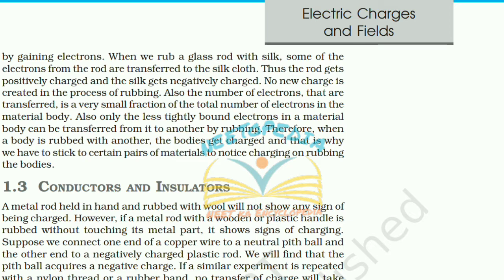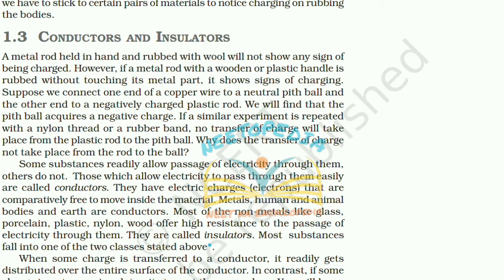1.3 Conductors and Insulators. A metal rod held in hand and rubbed with wool will not show any sign of being charged. However, if the metal rod with a wooden or plastic handle is rubbed without touching its metal part, it shows signs of charging. If we connect one end of a copper wire to a neutral pit ball and the other end to a negatively charged plastic rod, the pit ball acquires a negative charge. If a similar experiment is done with a nylon thread or rubber band, no transfer of charge takes place.